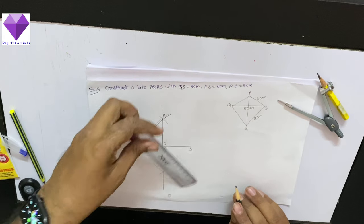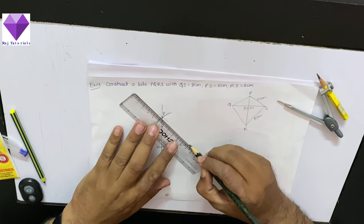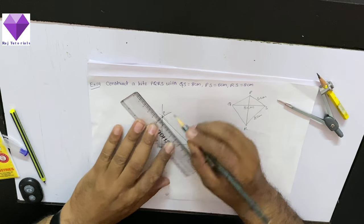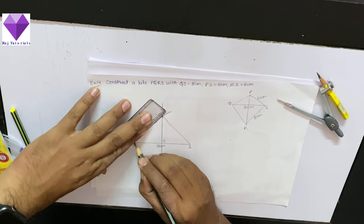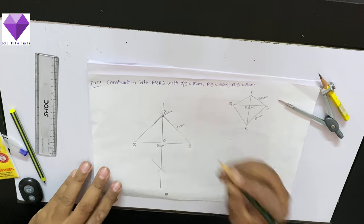Now, I will join PS and PQ, which both will be 6 cm. Similarly, with S as center and radius 8 cm.